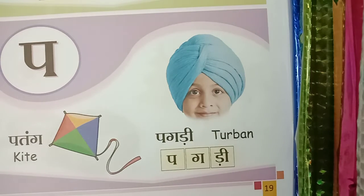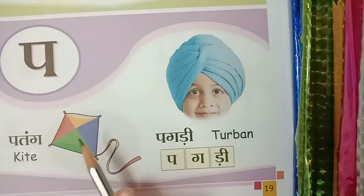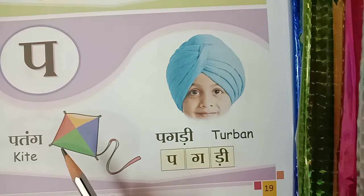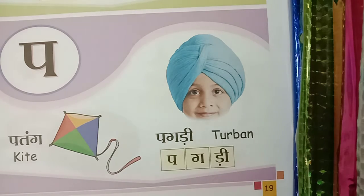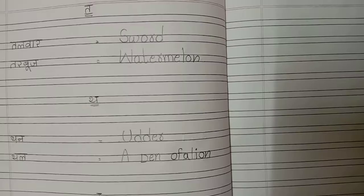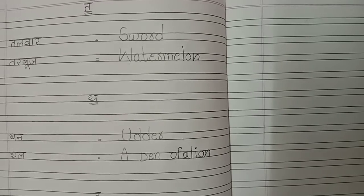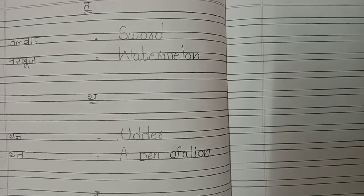Okay children. Now we write these meanings in rubbook — double rule rubbook. Okay children, open double rule notebook.